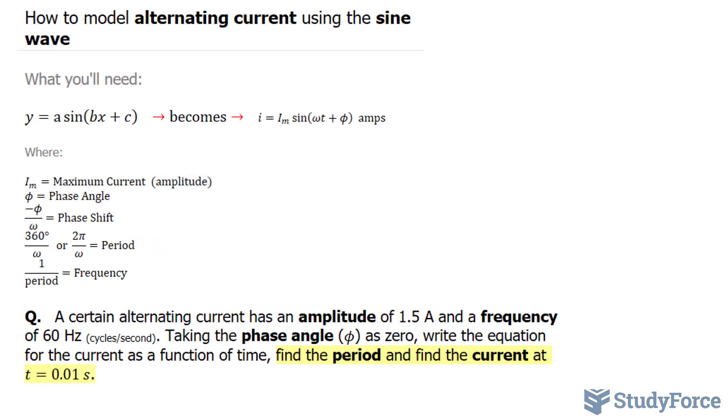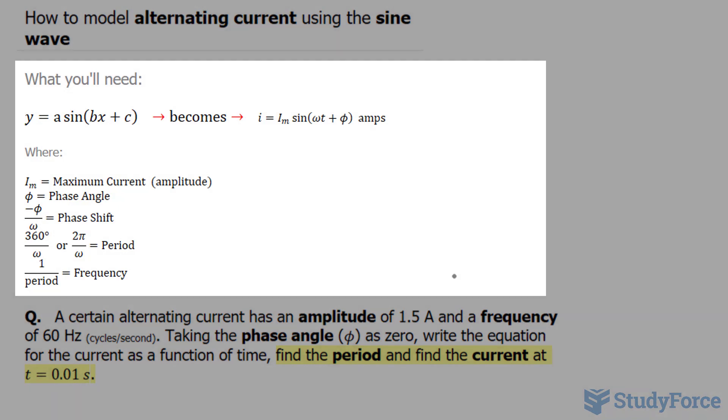In this video, I'll show you how to model alternating current using the sine wave. Let's start off by looking at what a sine function looks like. Your typical sine function looks like this: y is equal to a, which represents your amplitude, sine bracket bx plus c.